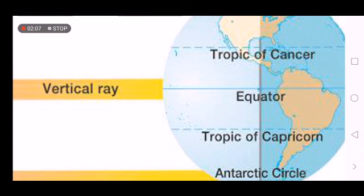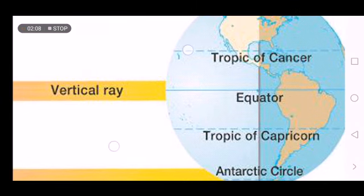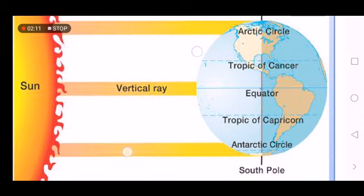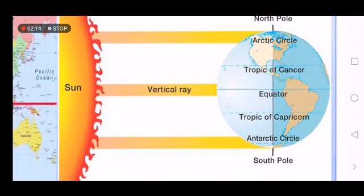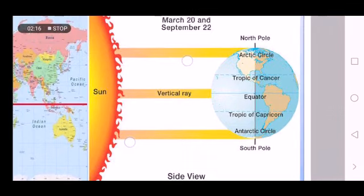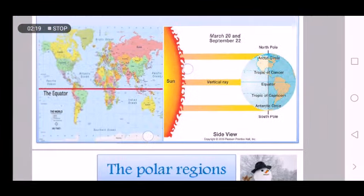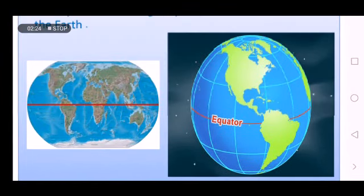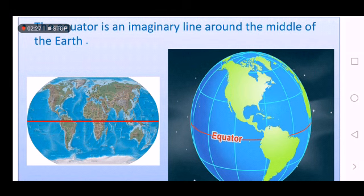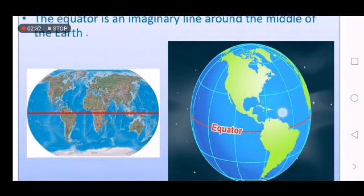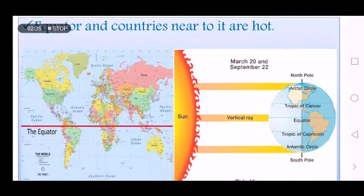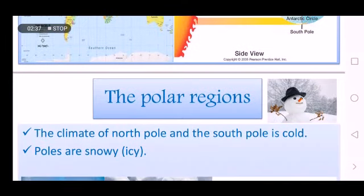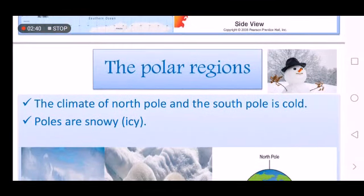The first reason why some countries are hot is because they are close to the equator — the Sun hits these countries and makes them hot. The hottest part of the Earth is the equator, and the closer a country is to the equator, the hotter it is. Now let's look at another thing: polar regions.